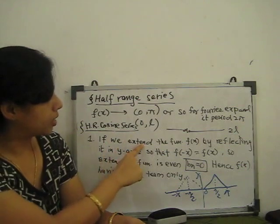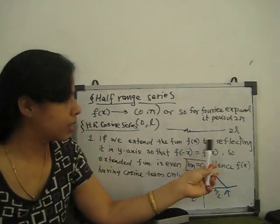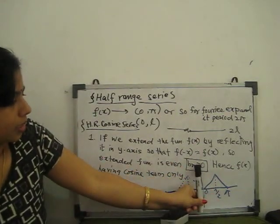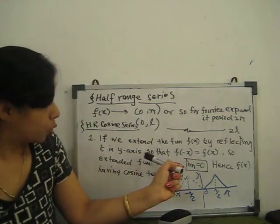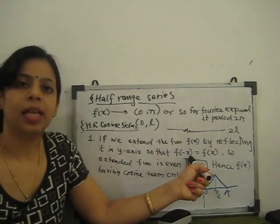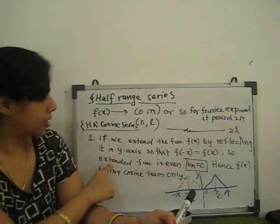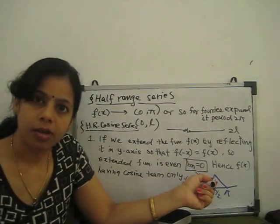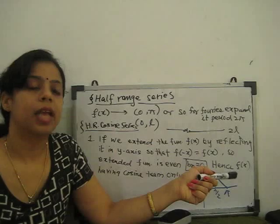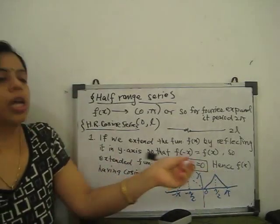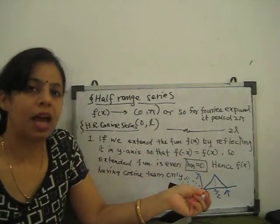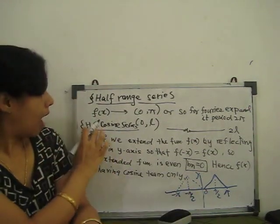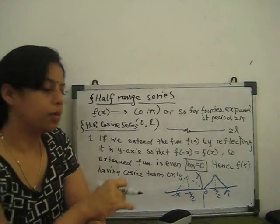If we extend the function f(x) by reflecting it in the y-axis so that f(−x) = f(x), the extended function is an even function. For even functions, bₙ = 0, hence f(x) has only cosine terms. So it is the half-range cosine series.